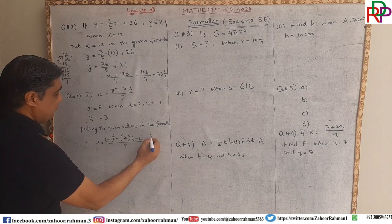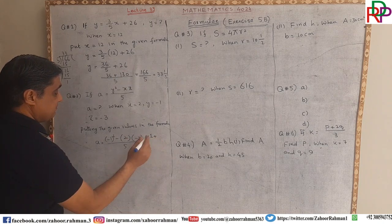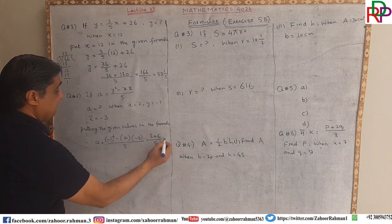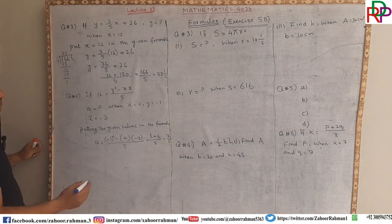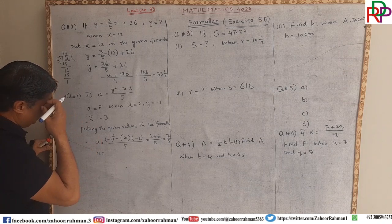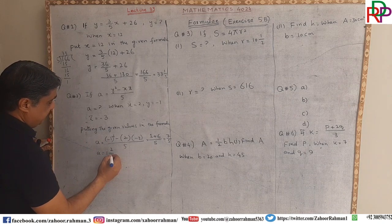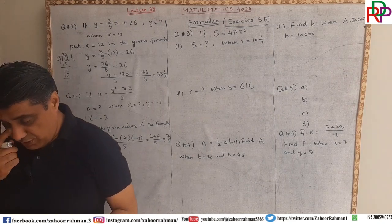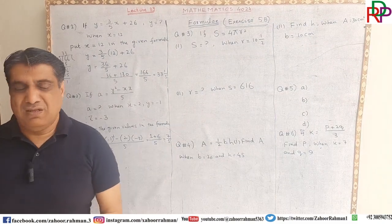Minus 1 whole squared becomes 1, and this minus becomes positive with the other minus, and 2 times 3 is 6. So we get 1 plus 6 divided by 5, which equals 7 divided by 5. When we divide 7 by 5, we get 1 whole 2 over 5 as the answer.